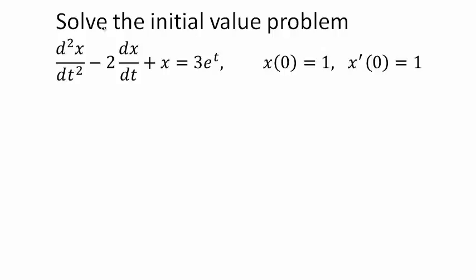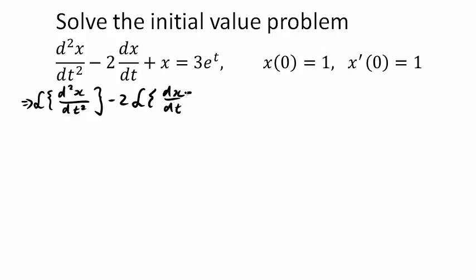For this differential equation, if the left-hand side equals the right-hand side, then so do their Laplace transforms. So we can find the Laplace transform of the left-hand side, splitting it up using the linearity of the Laplace transform. This gives us L{x''} minus 2·L{x'} plus L{x} equal to L{3e^t}. Don't forget to apply the Laplace transform to the right-hand side as well.